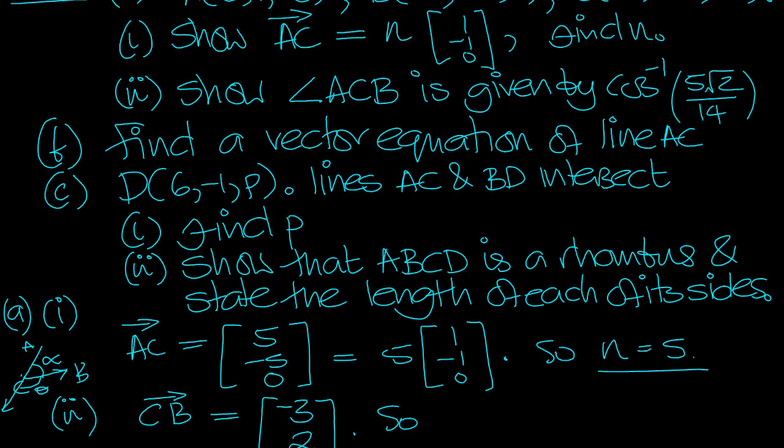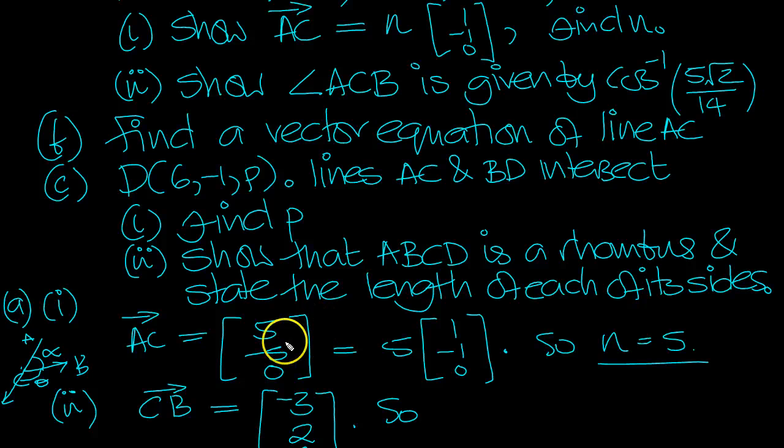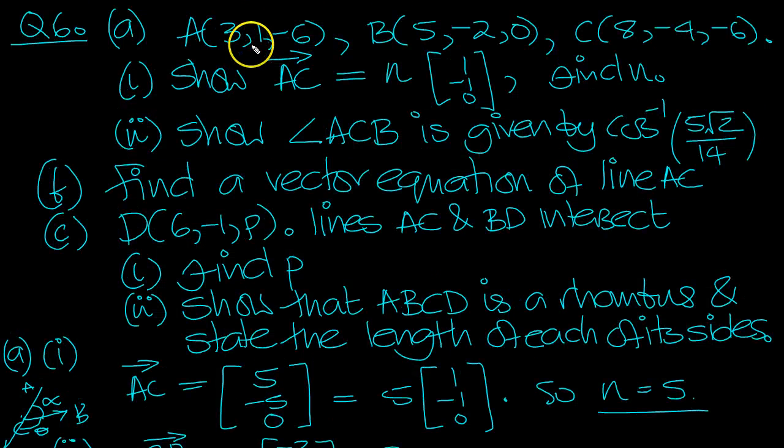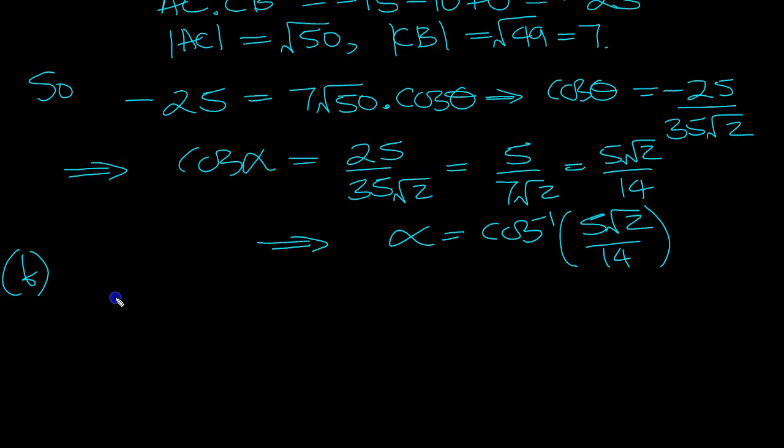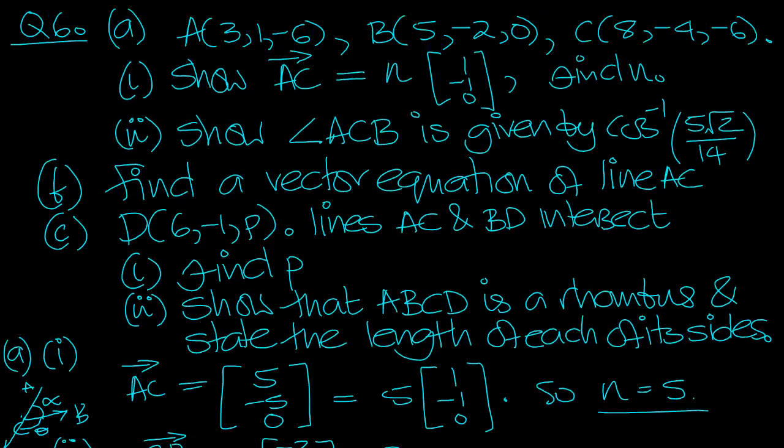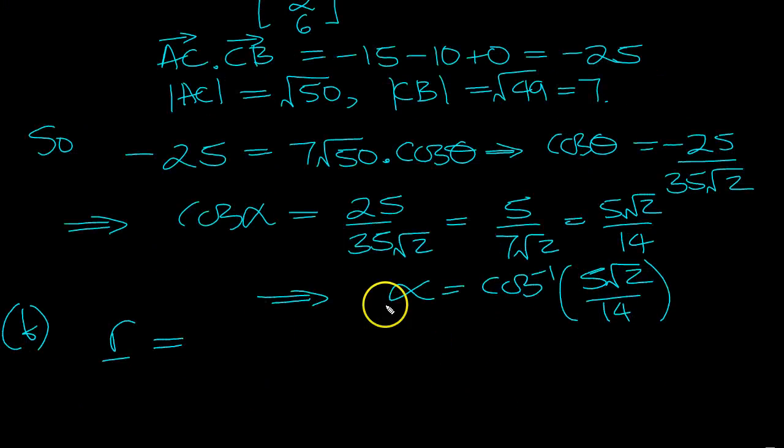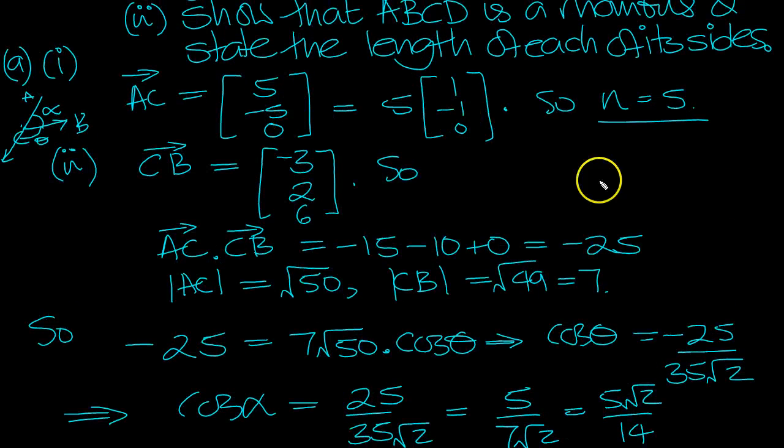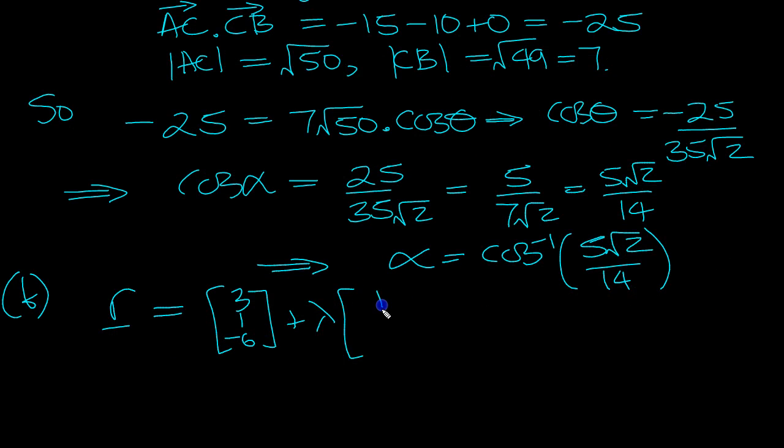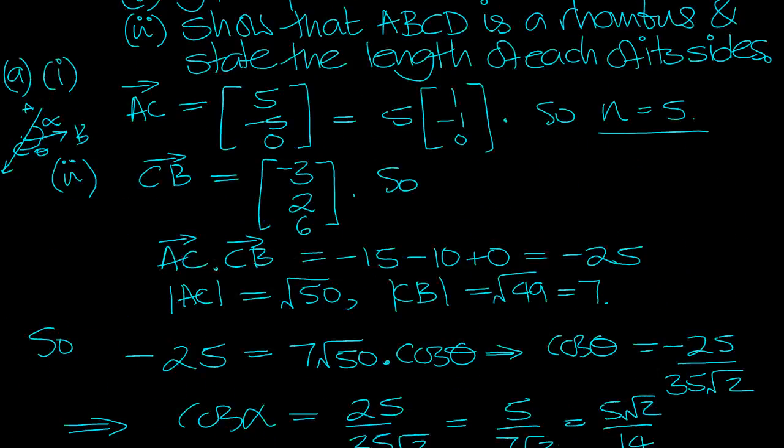Find the vector equation of the line AC. So we've got the direction. We know the vector of A is 3, 1, minus 6. The equation of the line AC is A which is 3, 1, minus 6, plus lambda times the direction AC, which we know is 5 minus 5 nought. But we can write 1 minus 1 nought because it's just a scalar multiple of that direction. So there's the line AC.